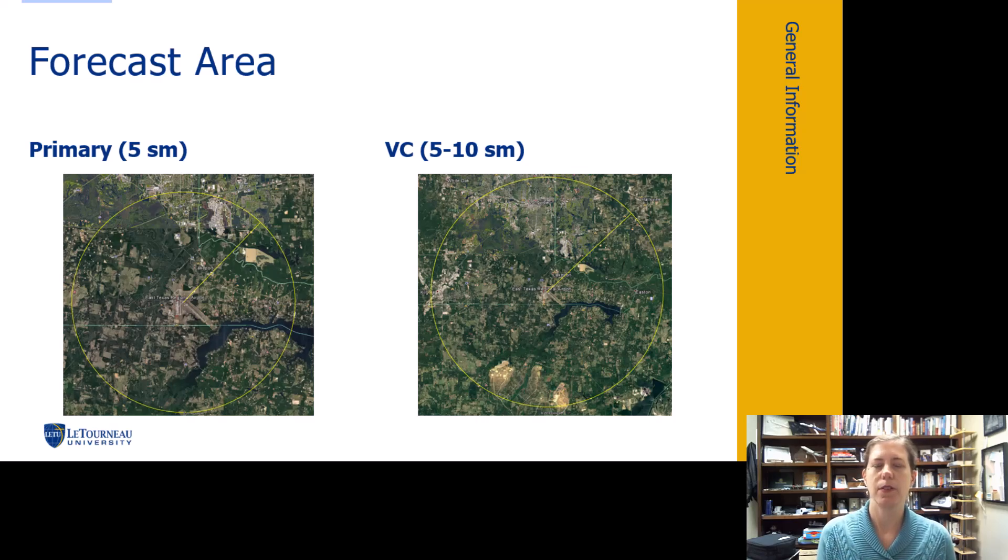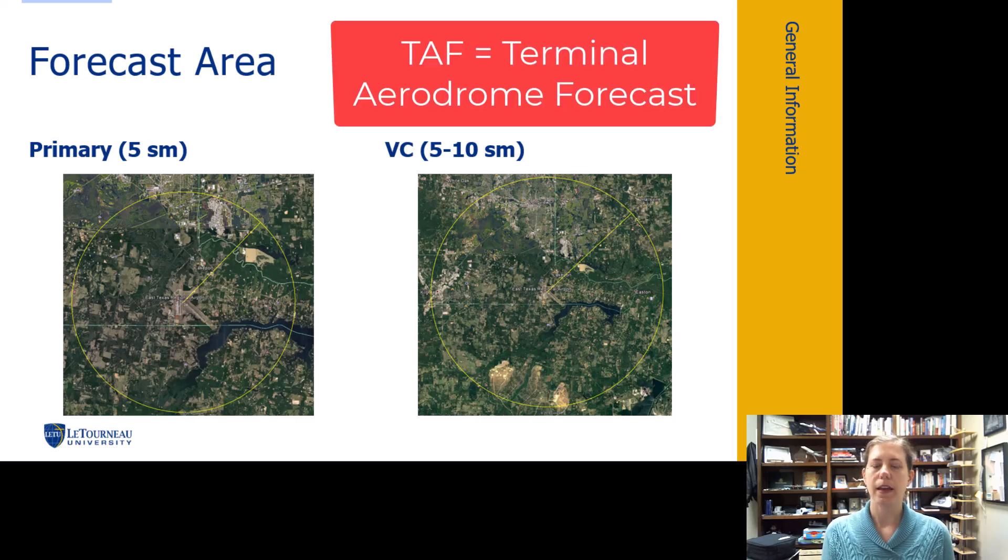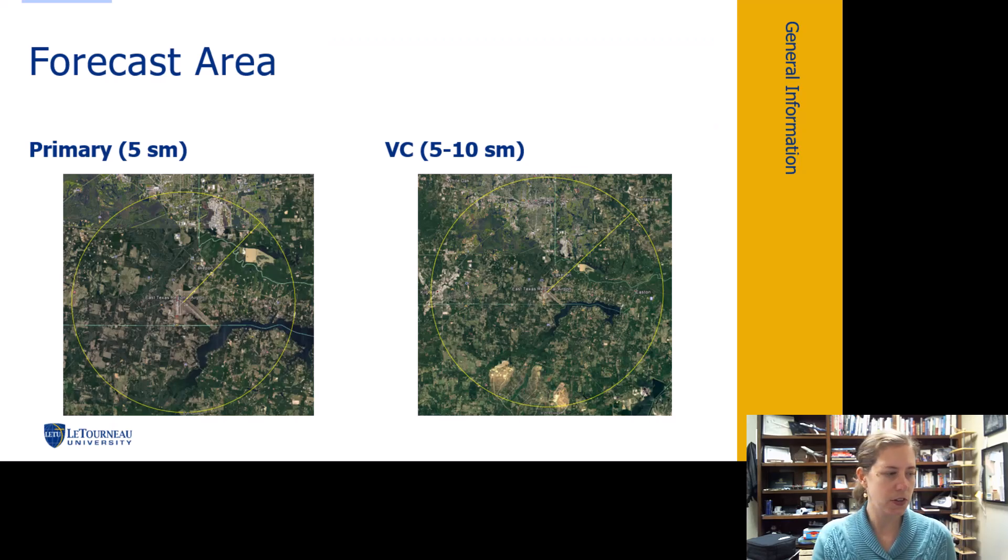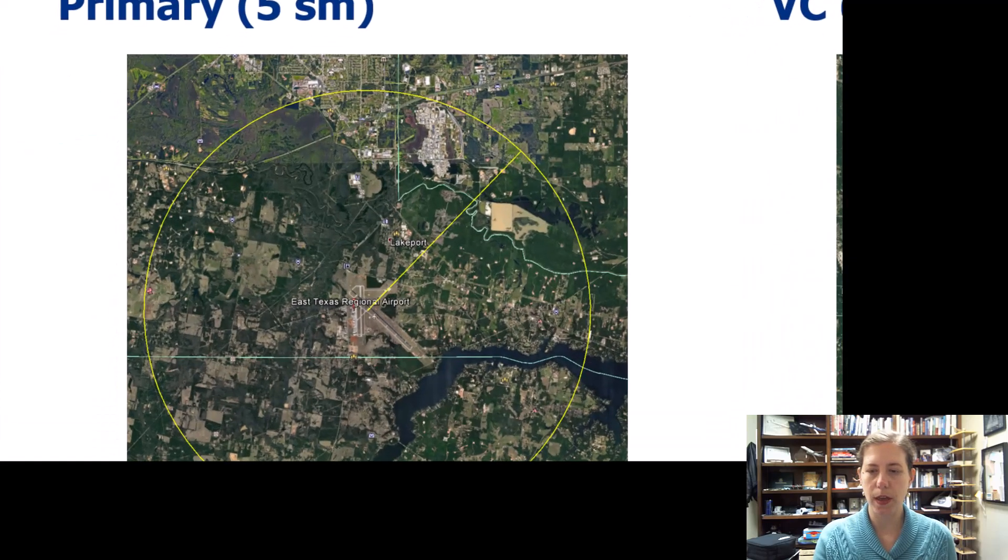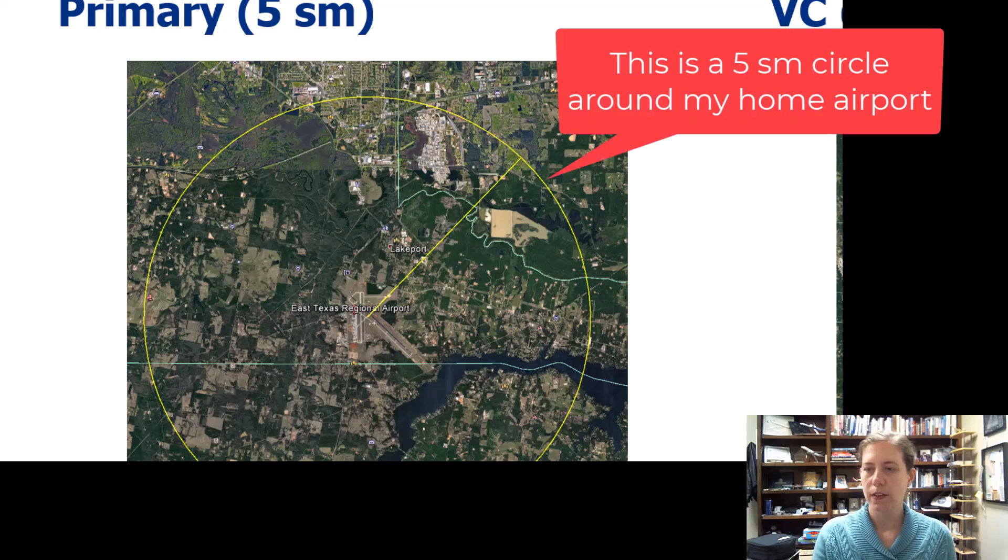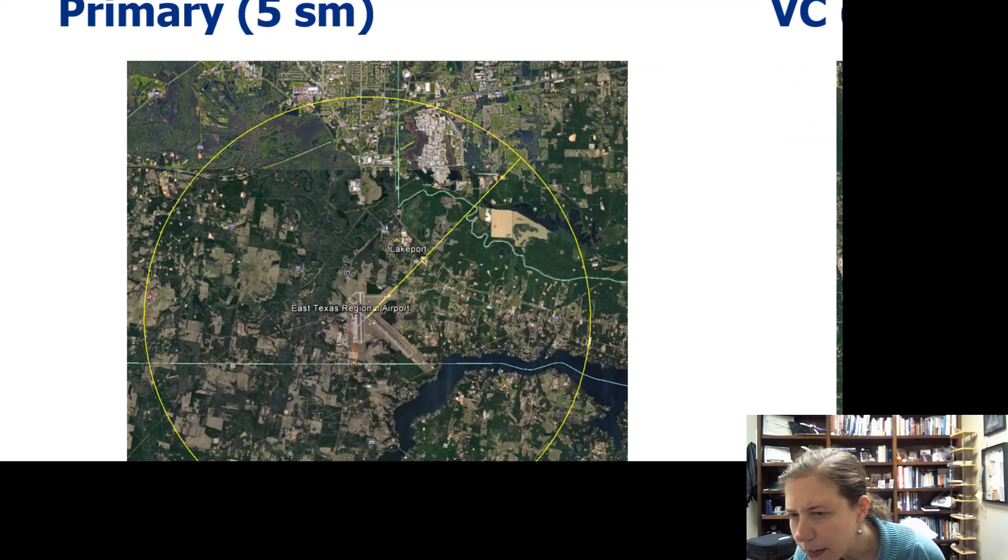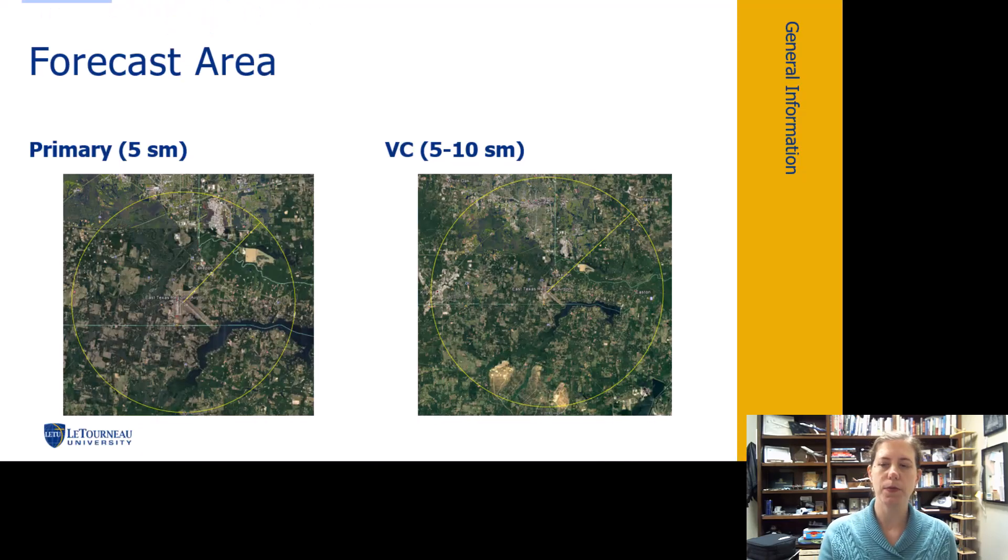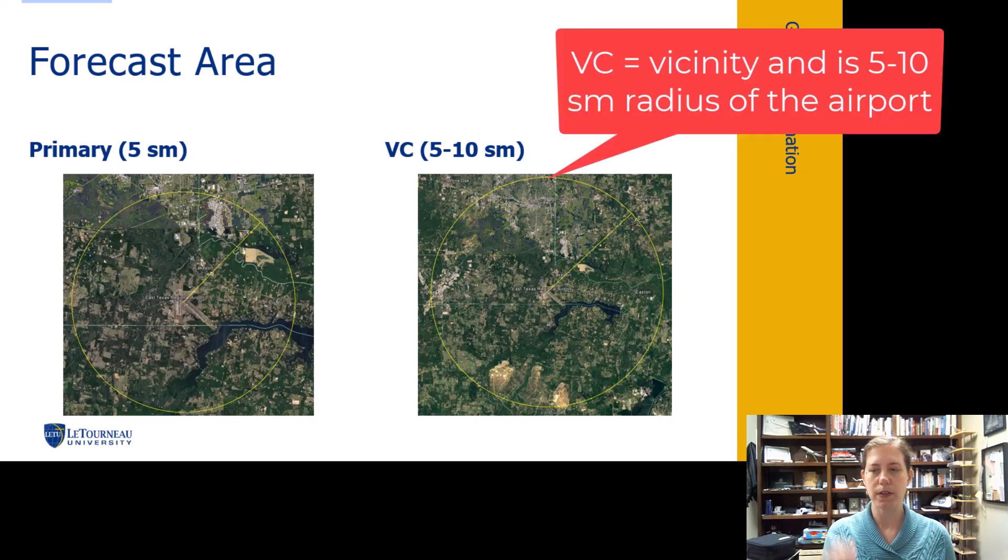TAF stands for Terminal Aerodrome Forecast. And this forecast area for our Terminal Aerodrome Forecast is five miles radius. So if we take a look just at one example of Google Earth at East Texas Regional Airport, here is a five-mile circle drawn around the airport. You can see that it is this area right here. It actually doesn't even get all the way up to where Letourneau's main campus is situated. That means vicinity. You need to know that the primary area is five and vicinity would be five to 10 statute miles.